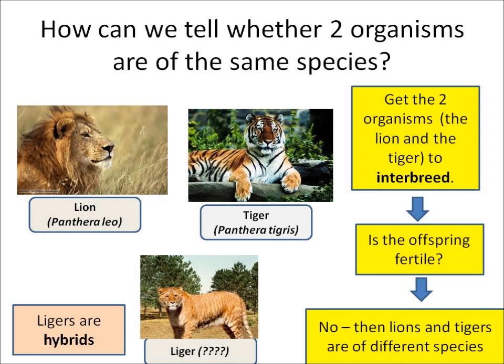Now let's look at a Lion and a Tiger. Are they of the same species? Lions and Tigers can breed together and have offspring called Ligers. But Ligers are not fertile — they can't have babies. This tells us that Lions and Tigers are of different species. Animals that result from two different species breeding are called hybrids.